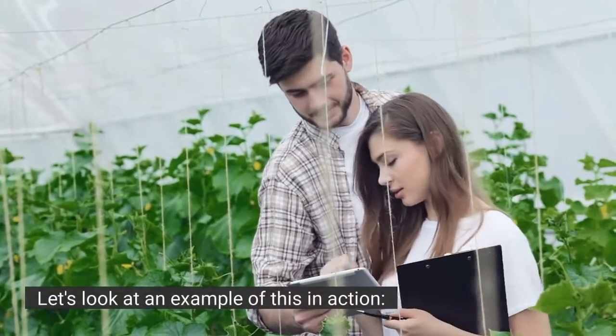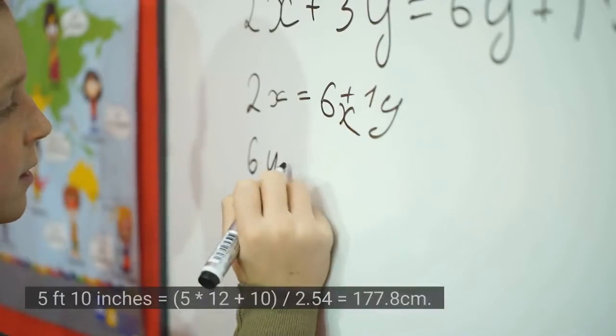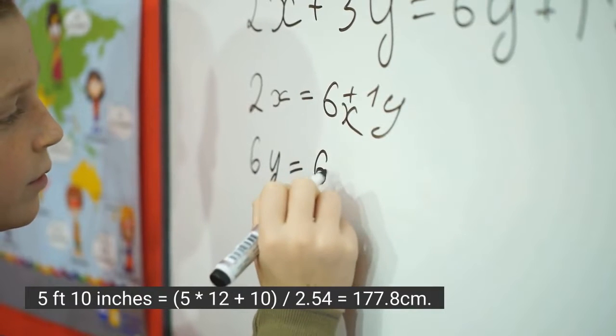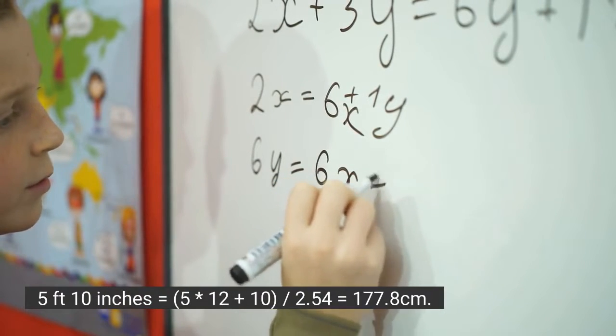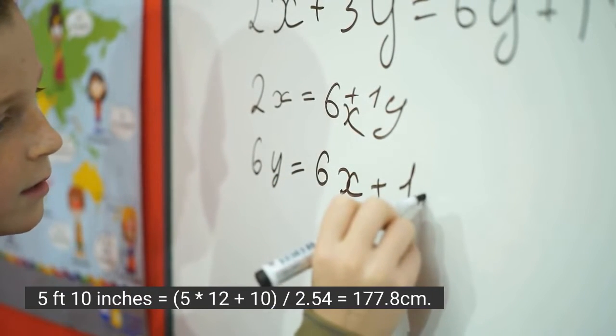Let's look at an example of this in action. 5 feet 10 inches equals 5 times 12 plus 10, divided by 2.54 equals 177.8 centimeters.